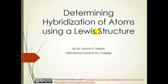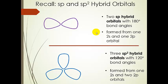We're going to learn to determine the hybridization of atoms in a molecule using a Lewis structure. The first thing we want to do is remember the different types of hybrid orbitals. SP hybrid orbitals are where we mix a 2s and one of the 2p orbitals. We mix those two atomic orbitals and get two hybrid orbitals back out, and they're sp hybrids with 180-degree bond angles.